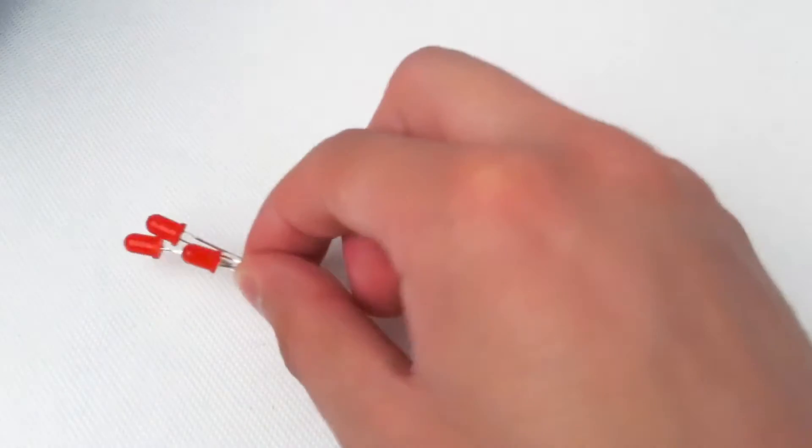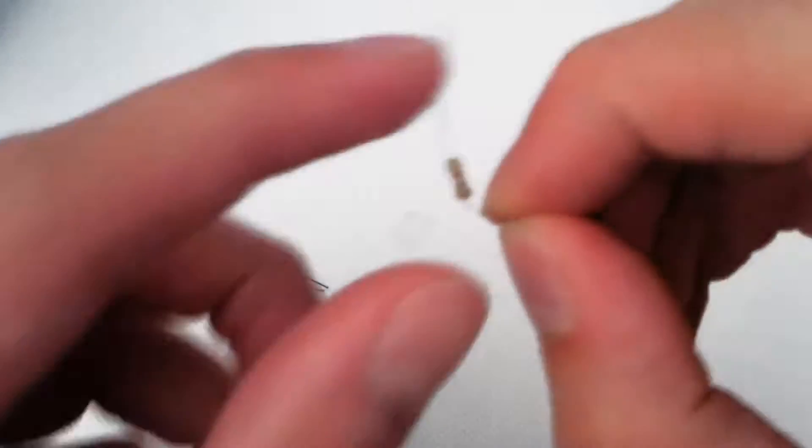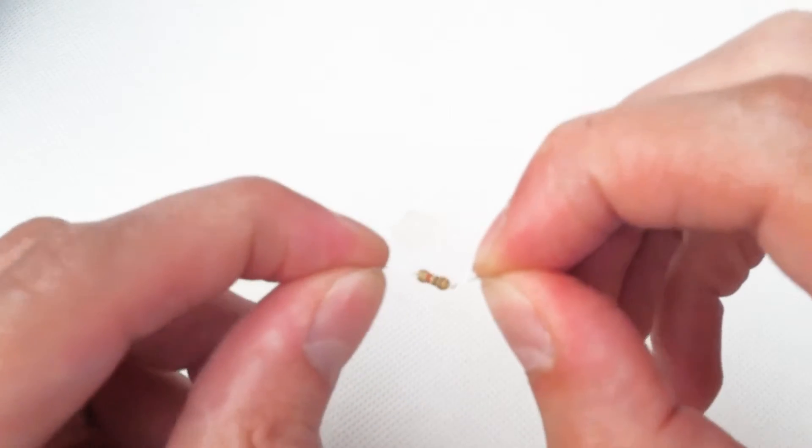Okay, well let's start off with project 3, our dimmer circuit. So for this what we'll need is 3 red 5mm LEDs, standard 1000 ohm resistor, 1k ohm.